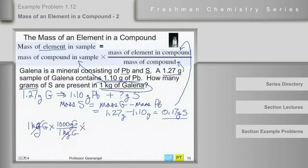Now we need to multiply by the mass fraction here, which is 0.17 grams of sulfur over 1.27 grams of galena. This is the mass fraction. This is this part of it right here given to us, at least indirectly, in the problem.